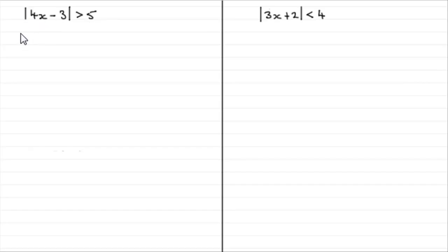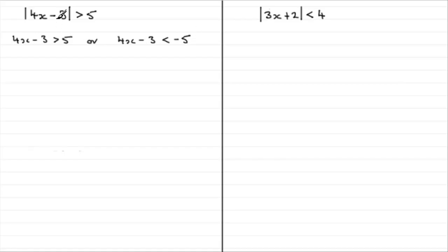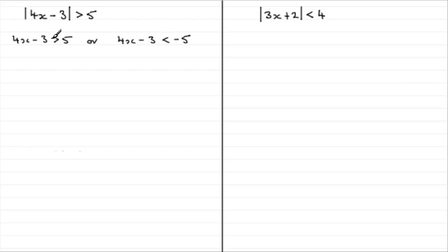To do something like this, knowing that this quantity has got to be positive, it leads to 4x minus 3 being greater than 5, or we can have 4x minus 3 being less than minus 5. If we have any value when it's modded, remember it returns the positive value. For example, mod 6 gives 6, which is greater than 5. And if I had minus 6 and modded it, I get back 6 and 6 is greater than 5. This will be true for any number less than minus 5 — if you mod it, you'll get back a value greater than 5. So we have these two situations.